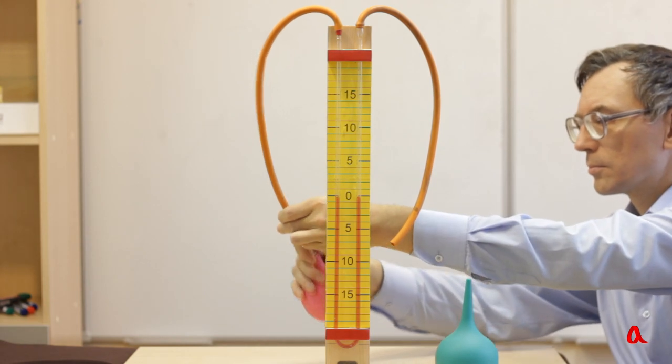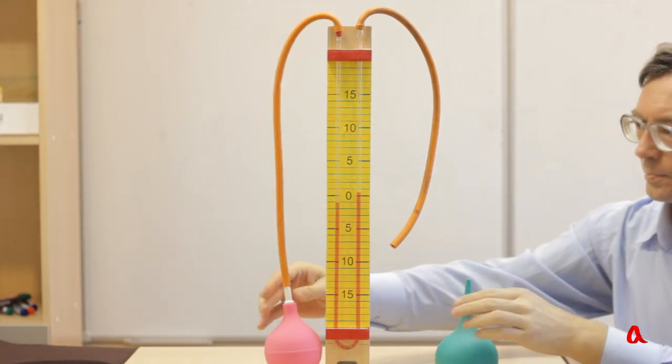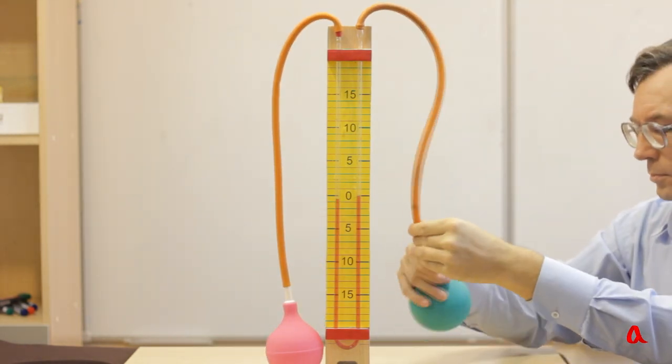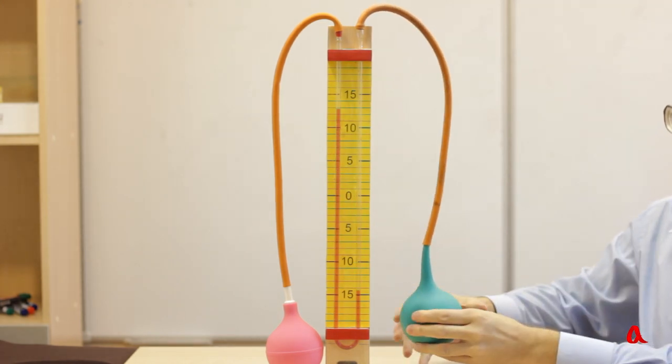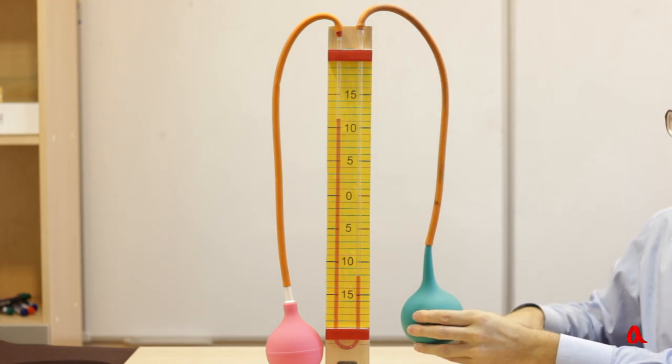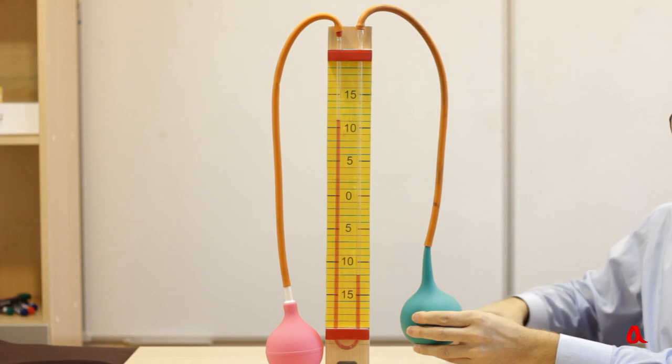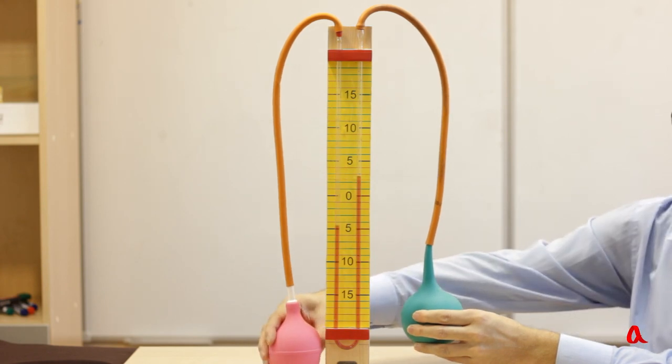Let's attach rubber bulbs to each end of the tube and squeeze the right bulb. The air pressure in it goes up and pushes the liquid out into the left bulb. Let's squeeze the left bulb. Now the pressure is higher in the left band.